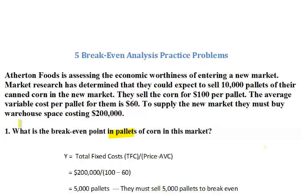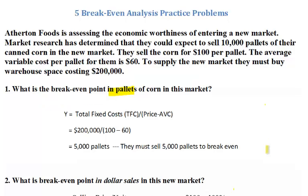You need to be able to do this in both dollars and pallets. Let's deal with our first equation. You've seen the derivation in the textbook. In our case, it's total fixed cost (TFC) divided by price minus average variable cost (AVC), and price minus AVC is our contribution. To pay off $200,000 of fixed cost, how many units do we need to sell where each one, after paying the variable cost, has $40 to chip in toward the $200,000 fixed? The answer is 5,000 pallets. So they must sell 5,000 pallets to break even — 5,000 pallets each contributing $40 equals $200,000.